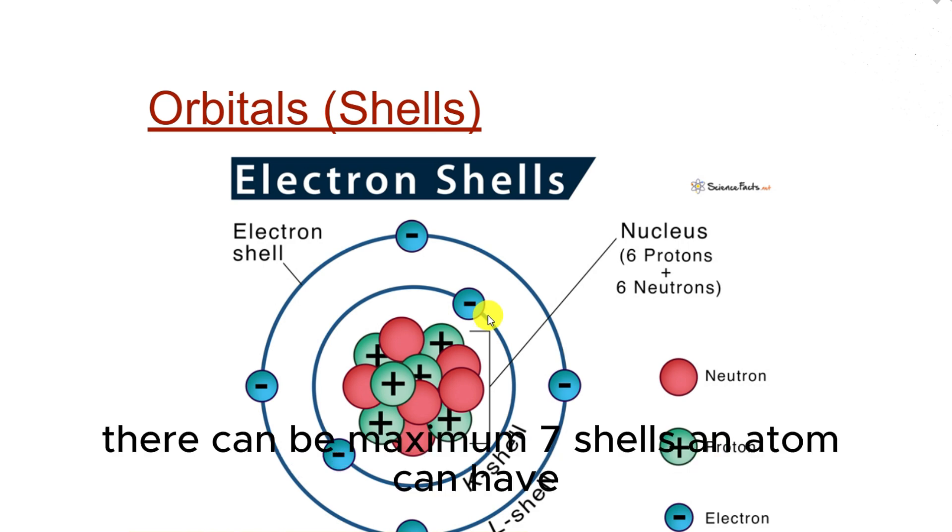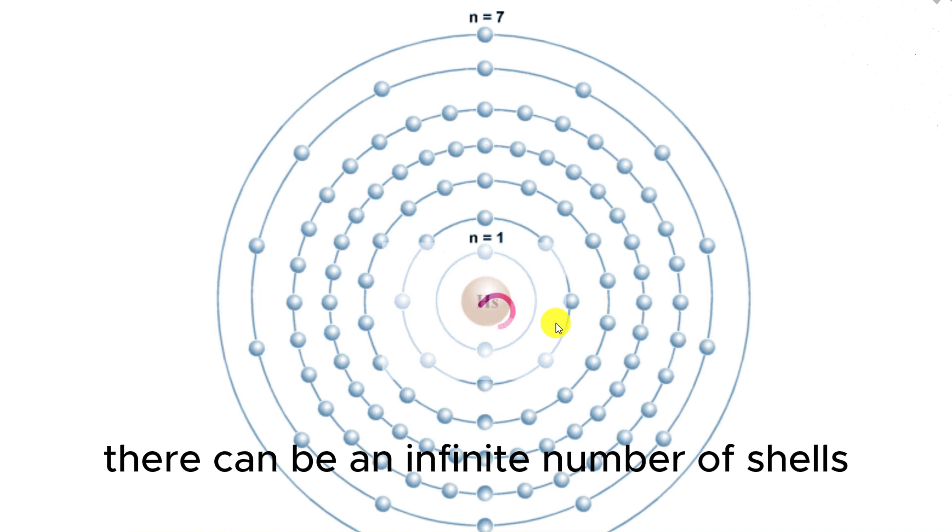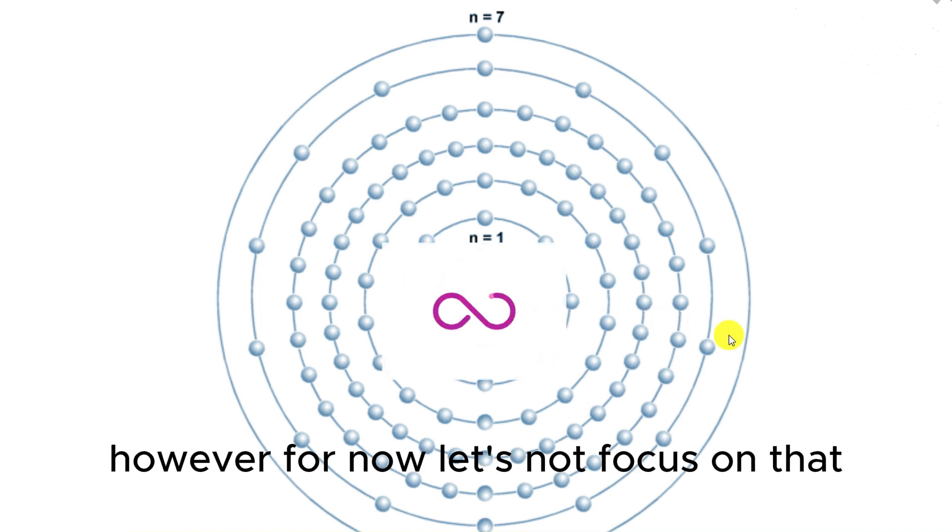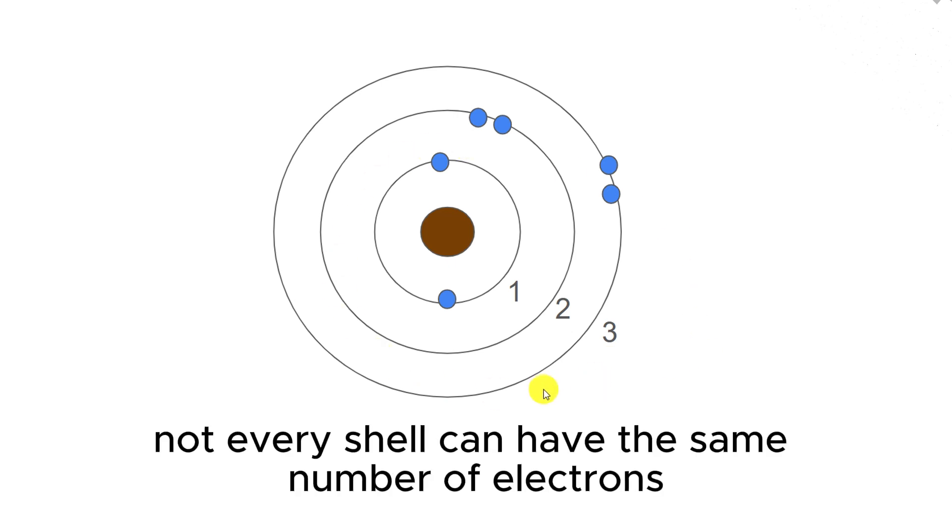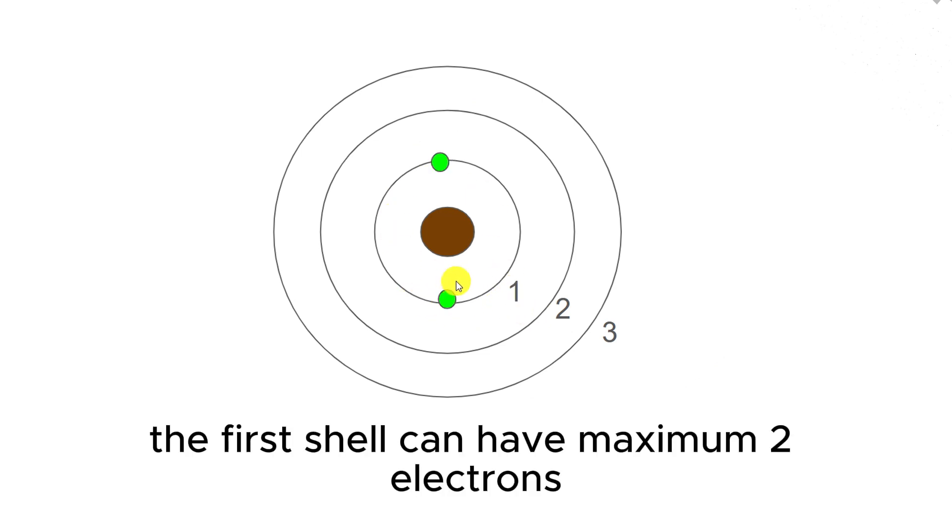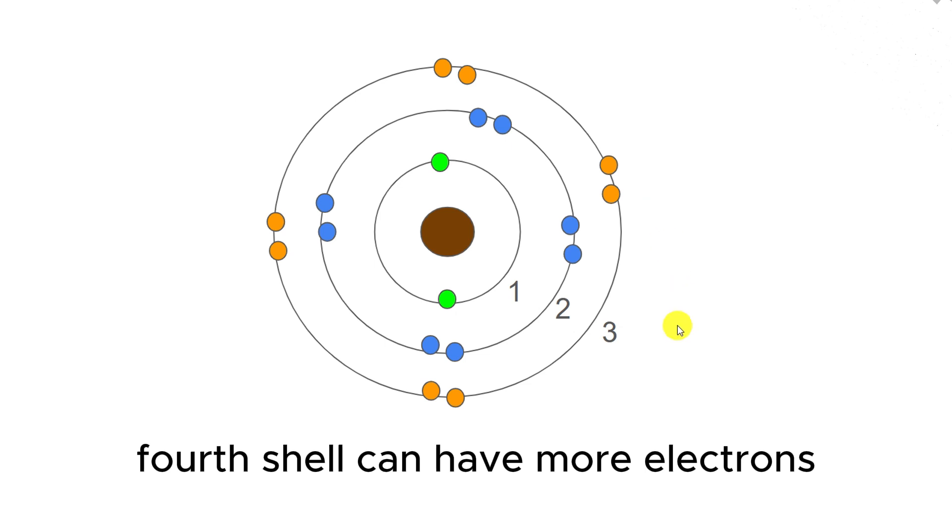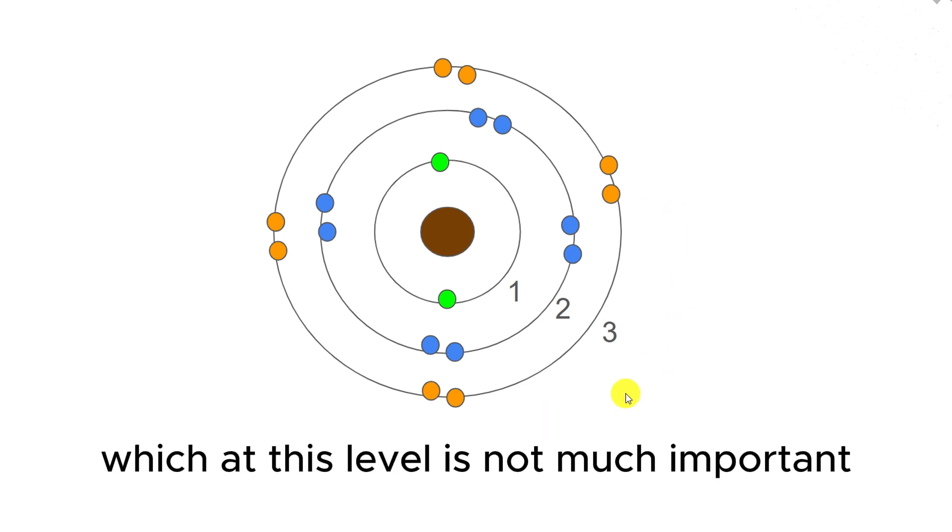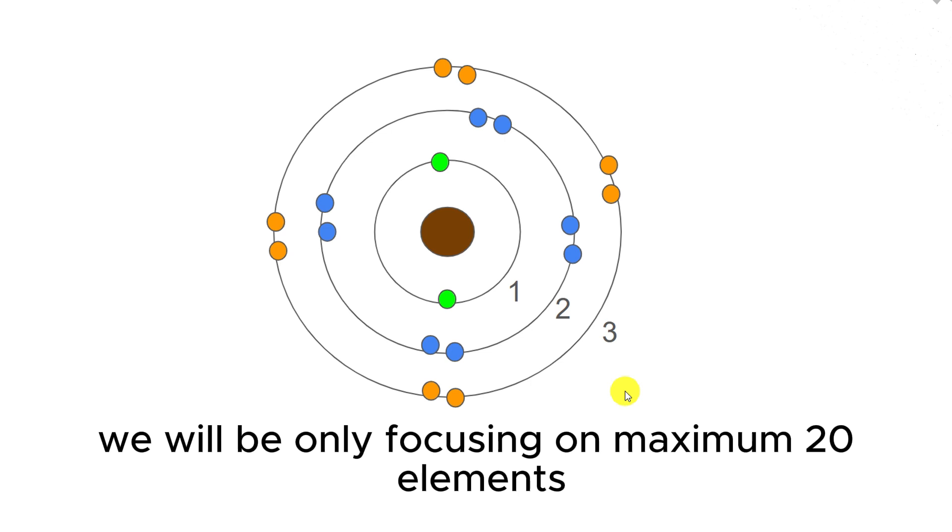There can be maximum seven shells an atom can have. Honestly speaking, there aren't just seven shells, there can be an infinite number, but for now, let's not focus on that. Electrons always get filled starting from the first shell and moving through second, third, and so on. But remember, not every shell can have the same number of electrons. The first shell can have maximum two electrons, and the second and third shells can have eight electrons. For year 9, we will be only focusing on maximum 20 elements.